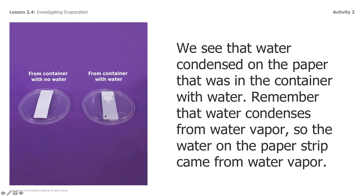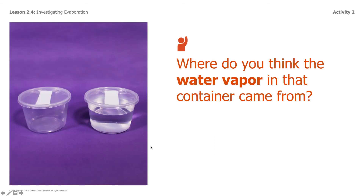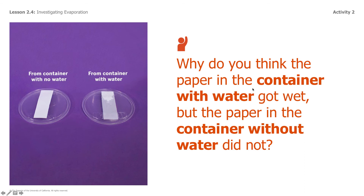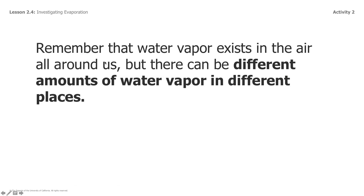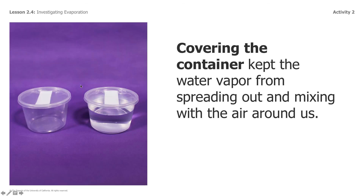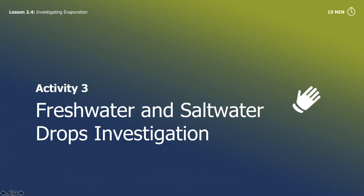The water condensed and then it got the strip wet. So where do you think the water vapor in the container came from? Why do you think the paper in the container with water got wet, but the paper in the container without water did not? Remember that water vapor exists in the air all around us, but there can be different amounts of water vapor in different places. Covering the container kept the water vapor from spreading out and mixing with the air around us — that's why we cover the containers.